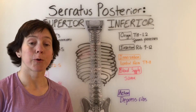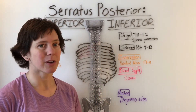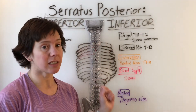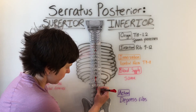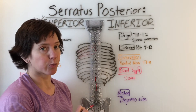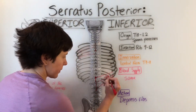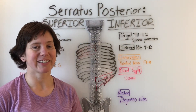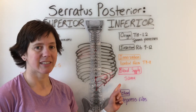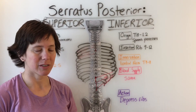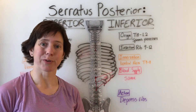For the serratus posterior inferior, it originates on the spinous processes of T11 through L2 and inserts on ribs 9 through 12. The innervation is ventral rami of T9 through T11. The blood supply is the same — posterior branches of the posterior intercostal arteries — and the action is to depress the ribs.